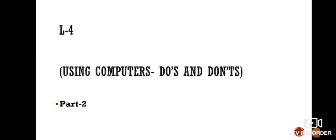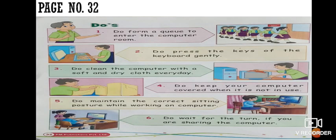Let's continue our syllabus with part 2 for lesson number 4, that is using computer do's and don'ts. Open page number 32 of your computer books. Do's means rules you need to follow while using a computer. There are 6 points mentioned in your book for do's. Let's read them and understand them one by one.